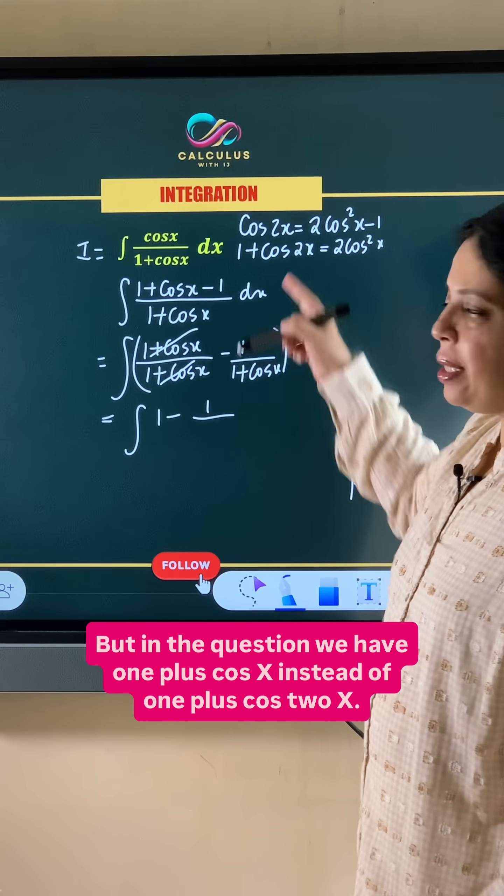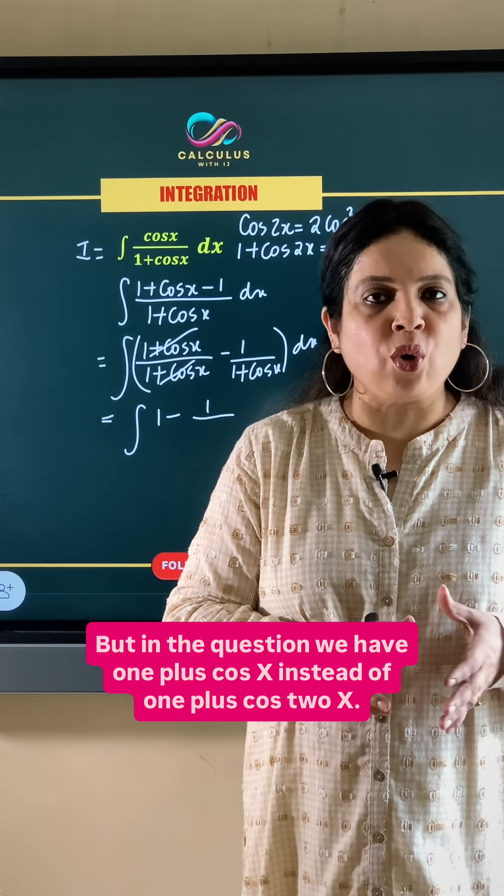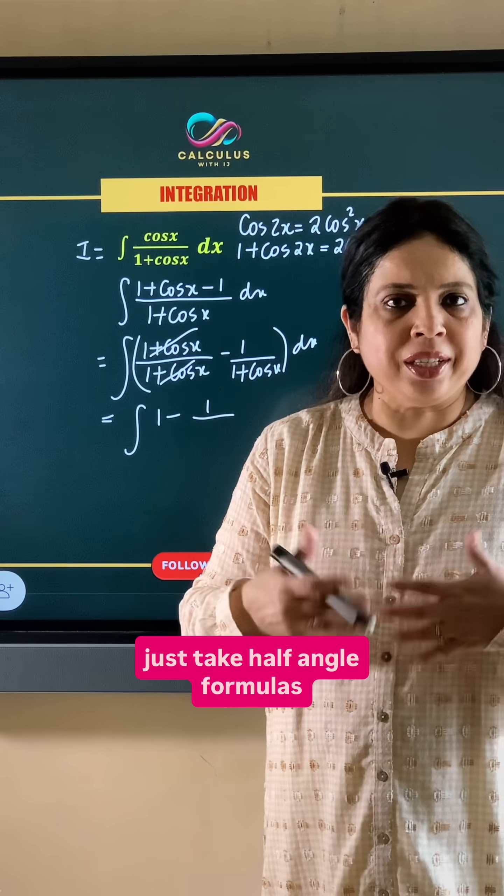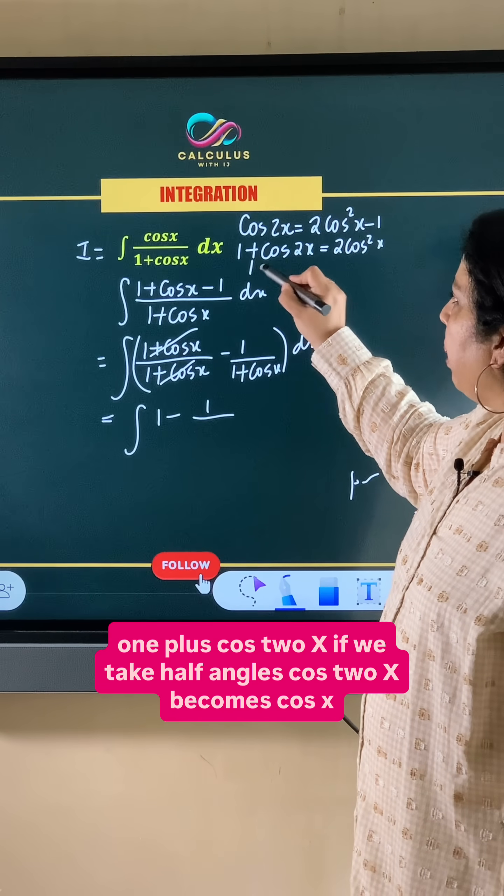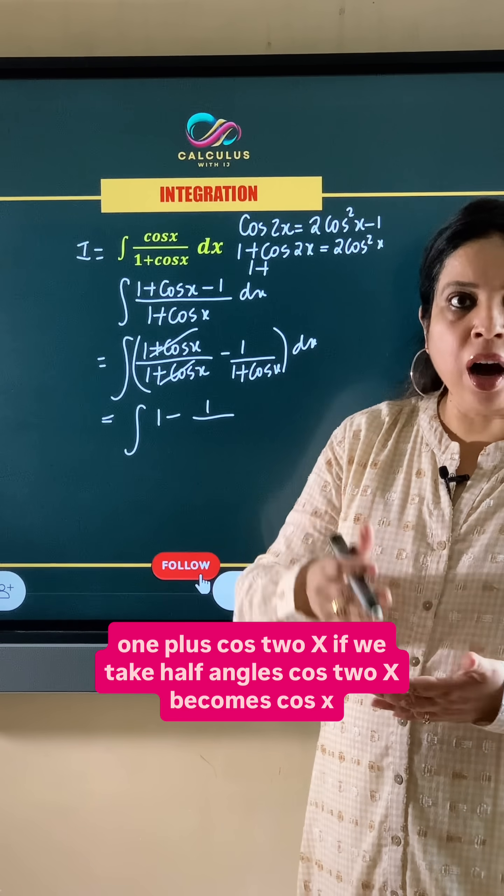But in the question we have 1 plus cos x instead of 1 plus cos 2x. So just take half angle formulas. So 1 plus cos 2x if we take half angles.